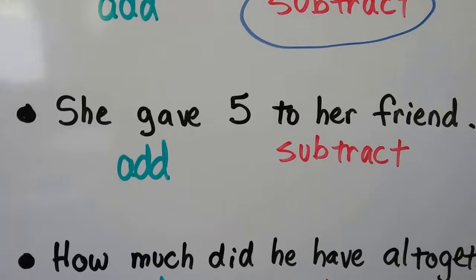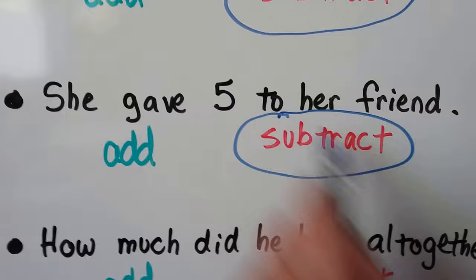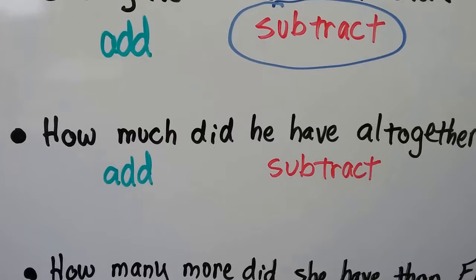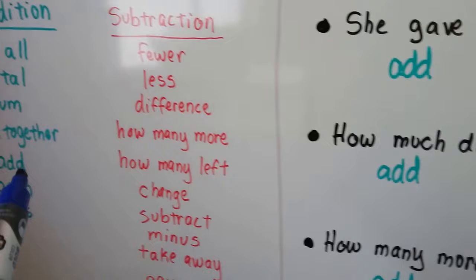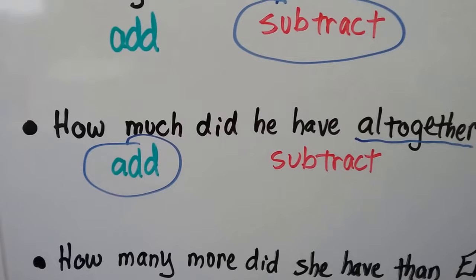If the problem says she gave five to her friend, she has less — and if she has less, that means it's subtraction. We need to find what she's got left because she gave some away. How much did he have all together? If you look at our addition list, 'all together' is a clue word for addition. This word tells us that we need to add — we're going to find out how much they have all together.